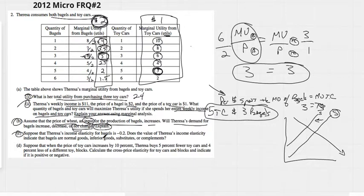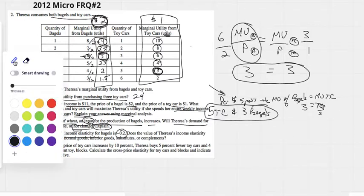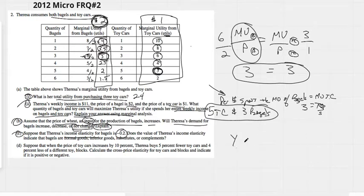All right, C, suppose that Teresa's income elasticity for bagels is negative 2. Does the value of Teresa's income elasticity indicate that bagels are normal goods, inferior goods, substitutes, or complements? You should just have it in your brain that income elasticity involves normal and inferior goods. We'll use Y for income. If income goes up, do we buy more normal goods or more inferior goods? Think about it.